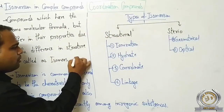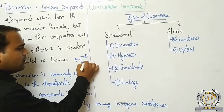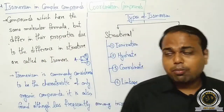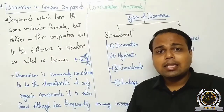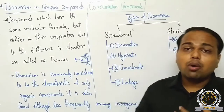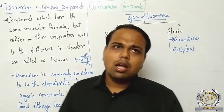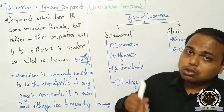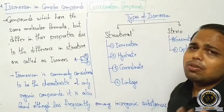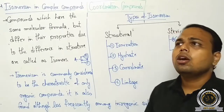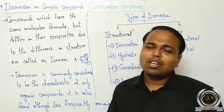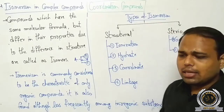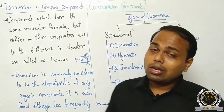If we have compound A but it has two different structures B and C, then B and C are the isomers of A। Questions will ask: which compound shows isomerism, and how many isomers are produced — just like in organic chemistry। Isomerism is commonly considered a characteristic of organic compounds and is also found, although less frequently, among inorganic compounds।